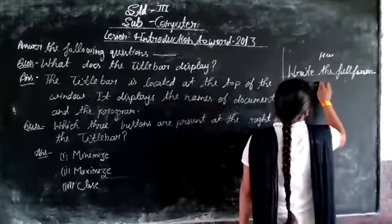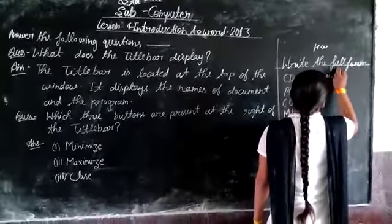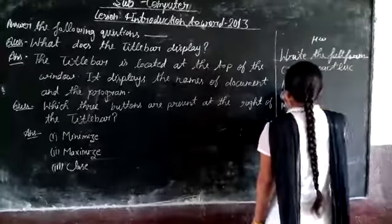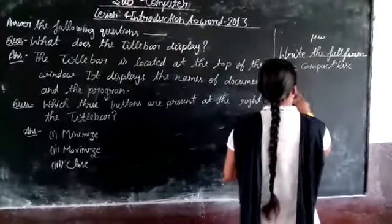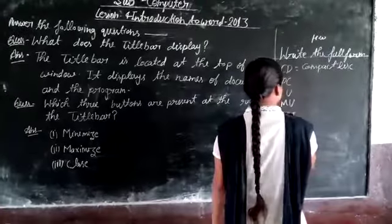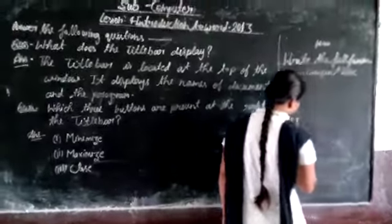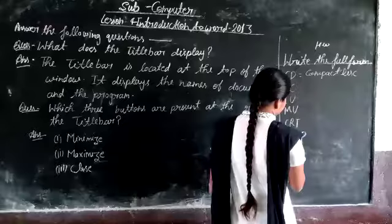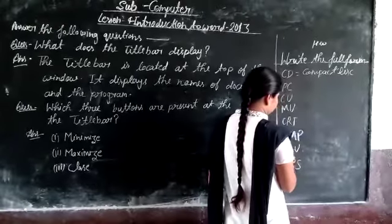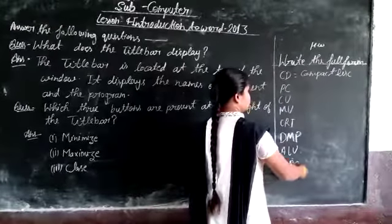CD to compact disc, PC to personal computer, CU to control unit, MU to memory unit, CRT to cathode ray tube, DNP to dot matrix printer, ALU to arithmetic logic unit, UPS to uninterruptible power supply.